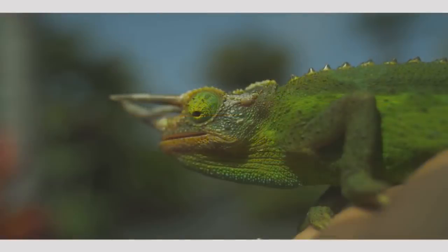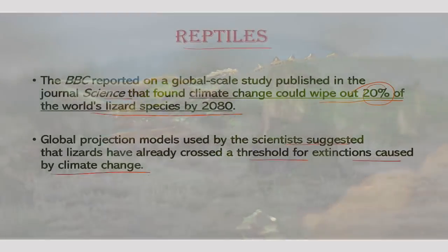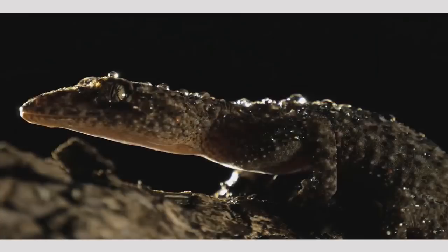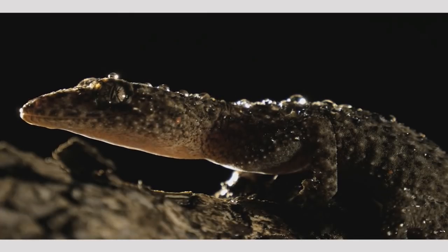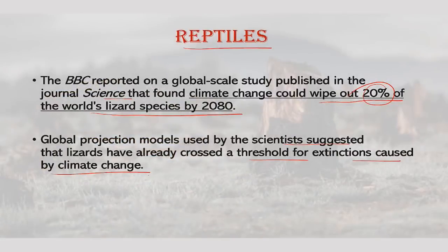Why are lizards so sensitive to climatic change? Lizards are far more susceptible to climate warming extinction than previously thought. Many species live right at the edge of their thermal limits. Rising temperatures leave lizards unable to spend sufficient time foraging for food as they have to rest and regulate their body temperature. More generally, 19% of world's reptiles are estimated to be threatened with extinction according to a study by IUCN and the Zoological Society of London.